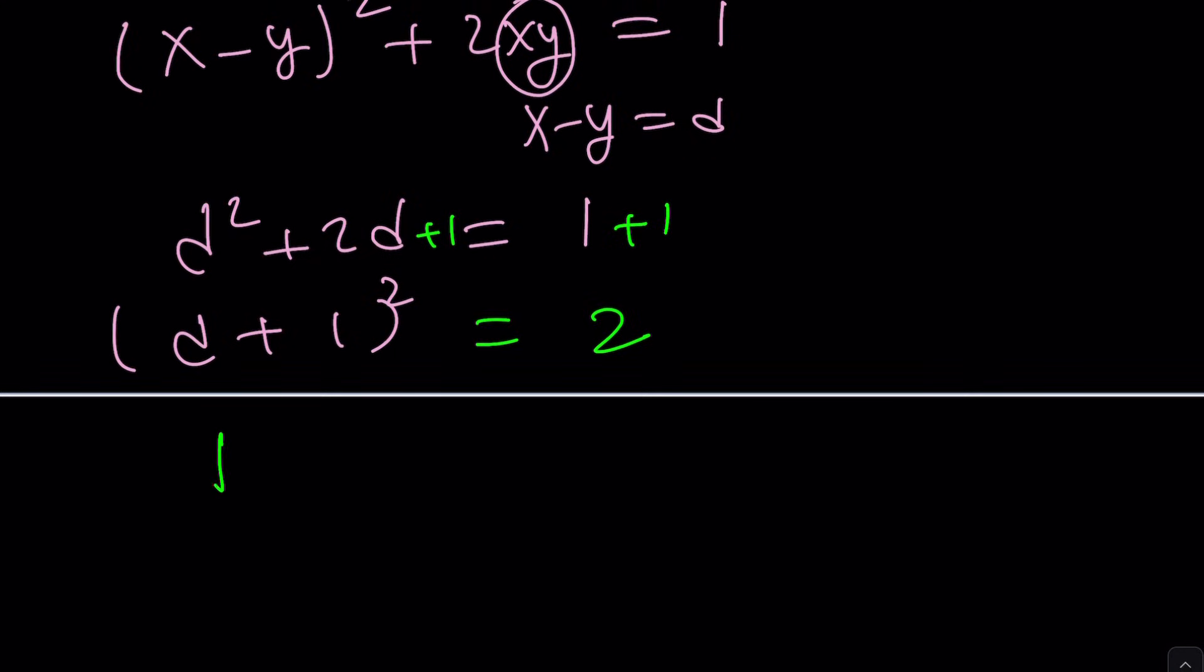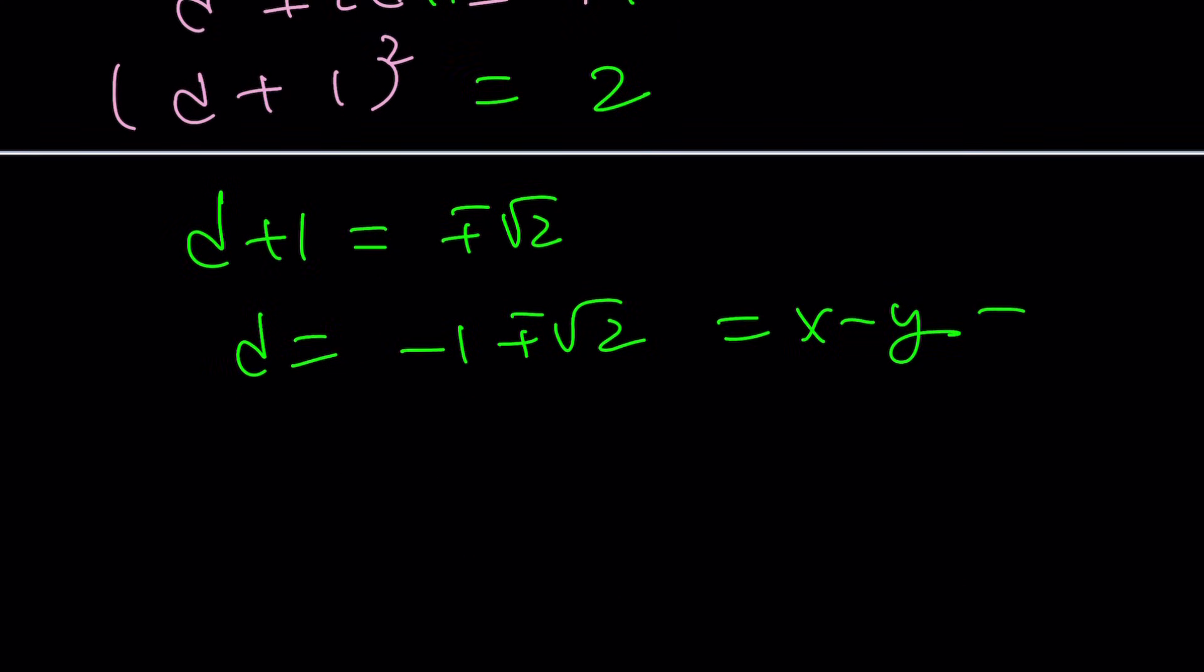From here we get d plus 1 equals plus minus root 2 and then d becomes negative 1 plus minus root 2. What is d? d is x minus y and then xy is also that because they're equal. You know that, right? And from here you get a system of equations. You can solve it. That's a lot of work. Doesn't matter. We get the same solutions. Let me show you what the solutions are.